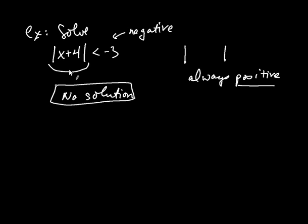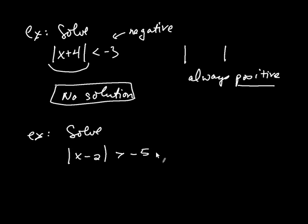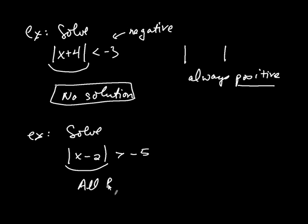You can imagine the other situation: what if you have the absolute value of something greater than a negative number? For example, the absolute value of x minus 2 is greater than negative 5. This is always positive, meaning it's always to the right of zero. If it's to the right of zero, then it's always greater than negative 5. So anything we put in there will always be greater than negative 5. In this case, the solution set would be all real numbers, which we write as negative infinity to infinity.